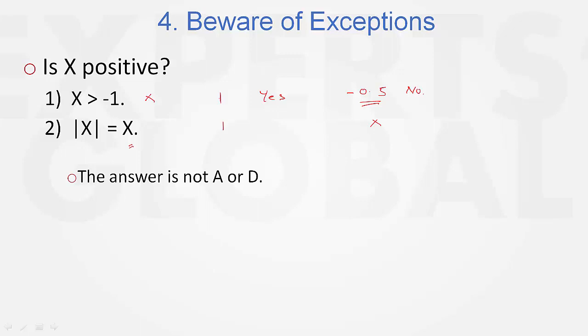there is one exception, and that exception is 0. |0| = 0. If x equals 0, this condition is satisfied that |x| = x. And what is the answer to this question, is x positive? The answer in this case would be no.